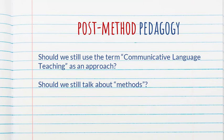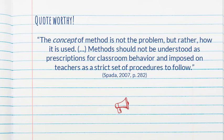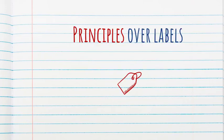Spada concludes with a brief discussion on the post-method pedagogy movement. This revolves around whether we should still be using the term communicative language teaching as an approach, since when someone says 'I follow communicative language teaching,' you cannot really picture what that person envisions — it means so many different things to so many different people. Should we still even be talking about methods? Spada writes that the concept of method is not the problem, but rather how it is used. Methods should not be understood as prescriptions for classroom behavior and imposed on teachers as a strict set of procedures to follow. The takeaway is: principles over labels.